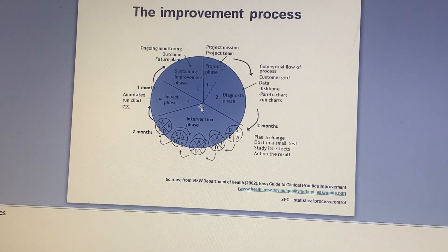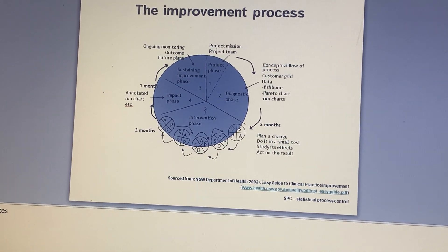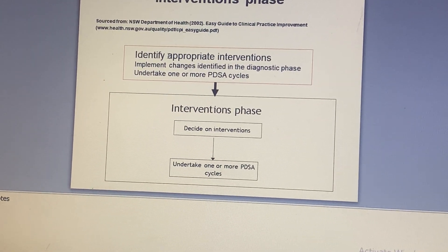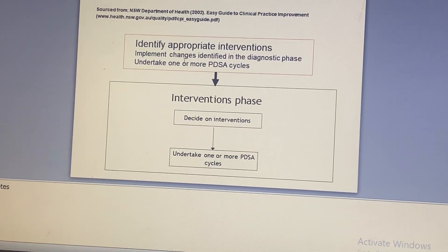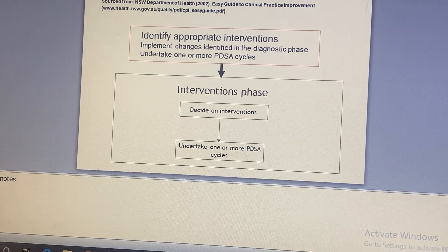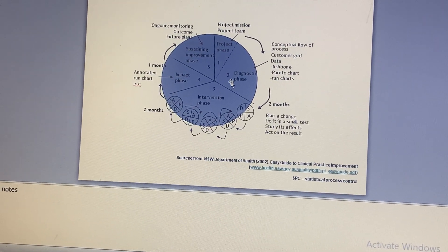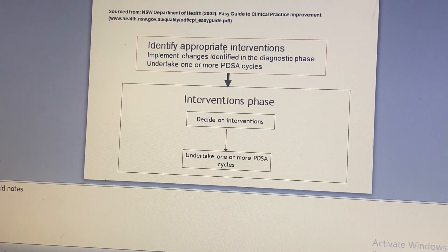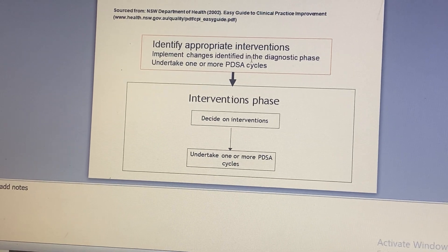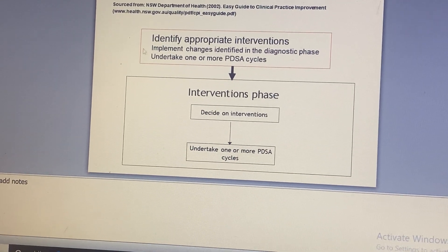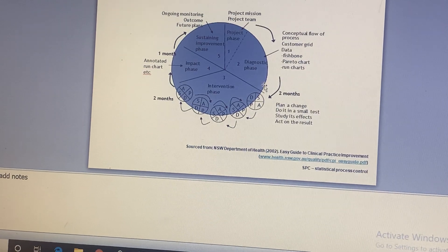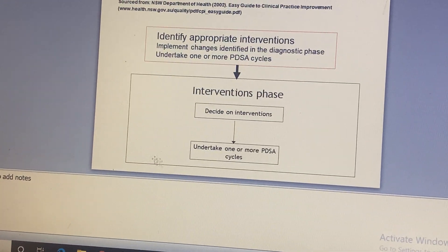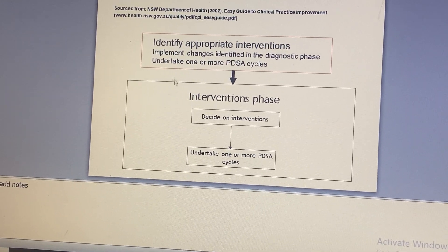In the intervention phase — which is phase 3 — we identify appropriate interventions, then implement the changes identified in the diagnostic phase. We undertake one or more PDSA cycles, which can be repeated multiple times in order to draw conclusions. This is what happens in the intervention phase.